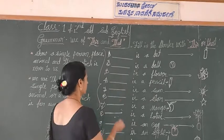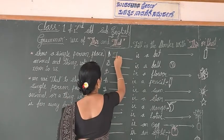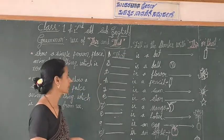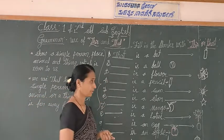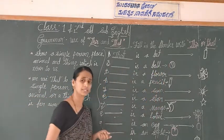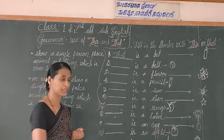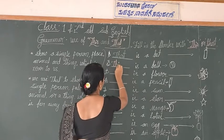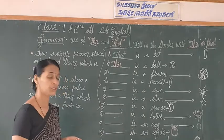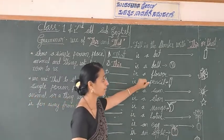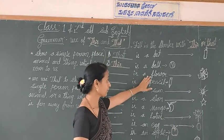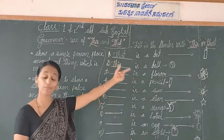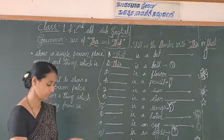Second one: dash is a ball. The ball is near to me or far away from us? Yes, the ball is near to me. So we use 'this'. Third one: dash is a flower. Near to me or far away? Yes, far away. So we use 'that'.